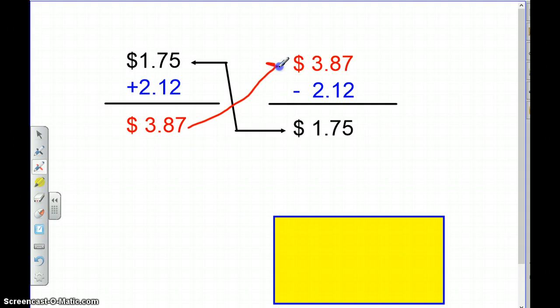So whatever the sum is, is now going to become the whole number which we're subtracting from. So $3.87 minus $2.12 has to equal $1.75.